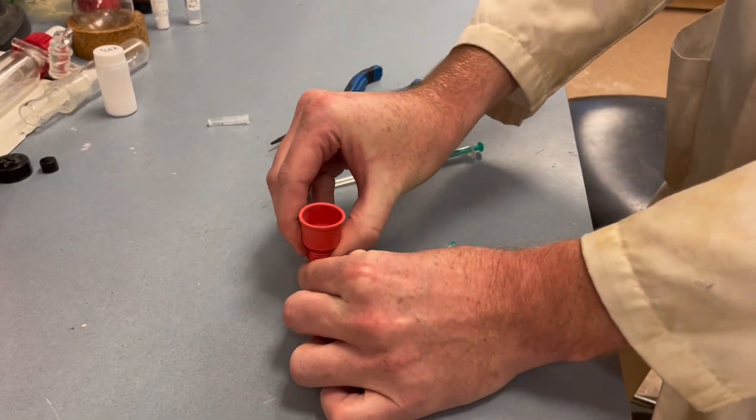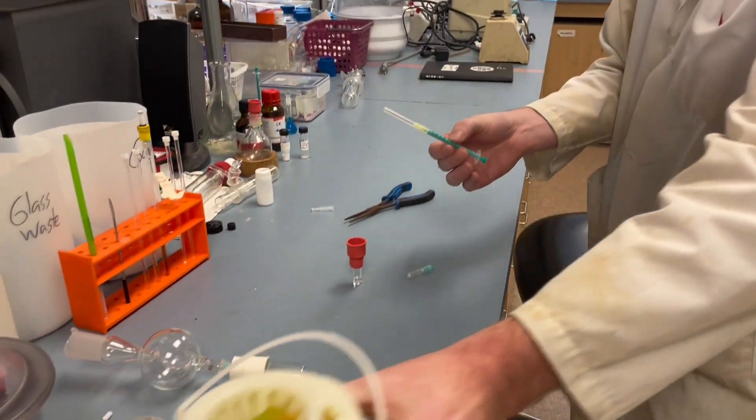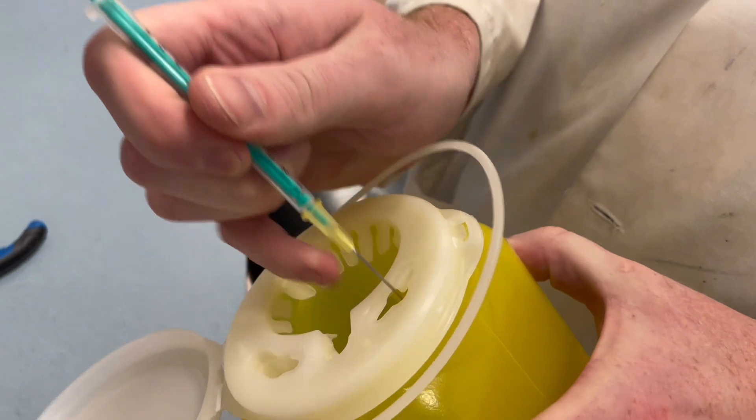So the first thing that we need to do is get a sharp tip needle which we use to initially pierce the septum, and we can remove the cap from it using the sharps container like this.